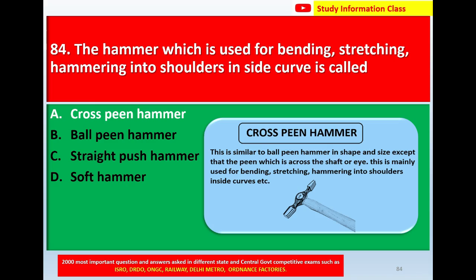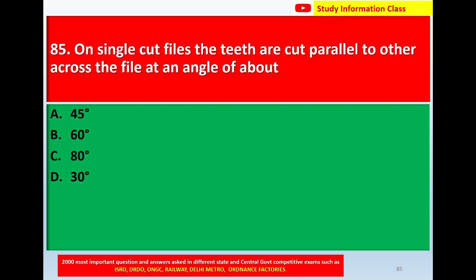Question number 85: On single cut files, the teeth are cut parallel to each other across the file at an angle of — option A: 45 degrees, option B: 60 degrees, option C: 80 degrees, option D: 30 degrees. Correct answer is option B: 60 degrees.